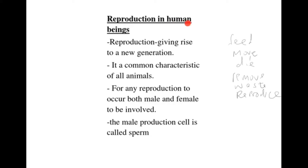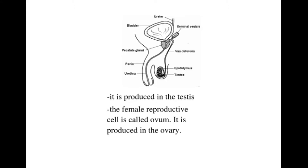If it's human beings, they produce other smaller human beings — in our case we call them babies or children. For other animals like cows, they produce young ones called calves, and these young ones ensure the future generation or a new generation. So for any reproduction to occur in animals, both the male and female reproductive parts have to be involved. In male reproduction, the most important part is the male reproductive cell called the sperm, which is produced in the part called the testis.